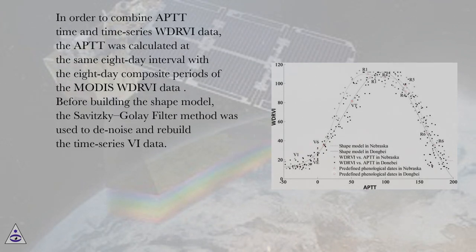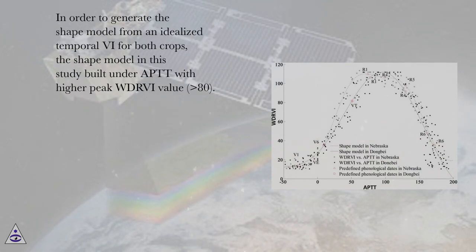In order to combine APTT time and time series WDRVI data, the APTT was calculated at the same 8-day interval with the 8-day composite periods of the MODIS WDRVI data. Before building the shape model, the Savitzky-Golay filter method was used to denoise and rebuild the time series VI data.